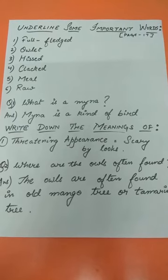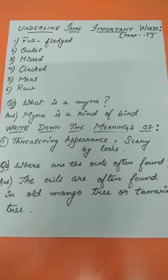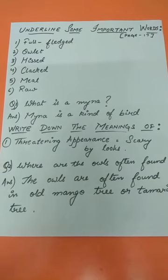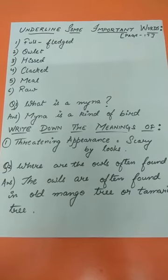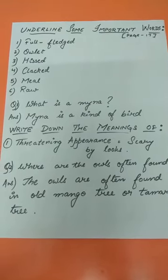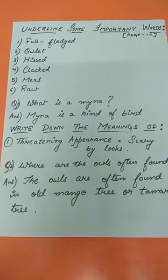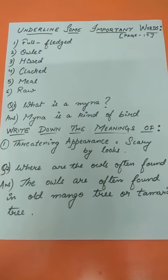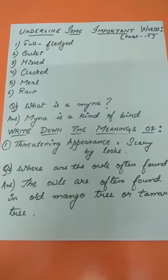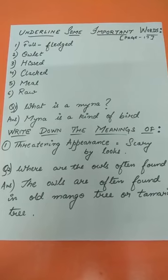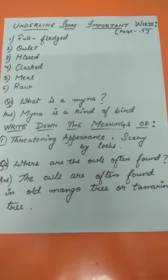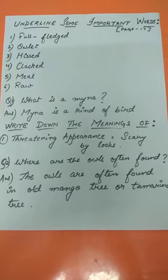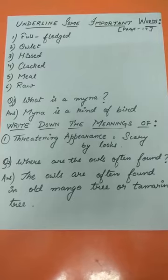Underline some important words given on page number 17. 1. Full-fledged. 2. Owlet. 3. Hissed. 4. Clad. 5. Meal. 6. Raw.